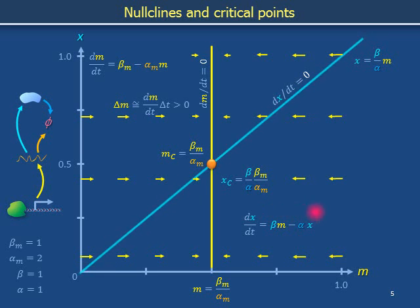Along the blue nullcline, time rates of translation and protein degradation precisely cancel. For a point to the right of the line — where messenger RNA level is relatively high — the time rate of translation exceeds the time rate for protein degradation, so the protein level increases over a short time interval delta_t, as indicated by the blue quiver pointing upward. To the left of the blue nullcline, the messenger RNA level is relatively low, so the time rate of translation is less than the time rate for protein degradation. dx/dt is negative, and protein level x decreases with time. We can fill in a field of quivers that become shorter in a graded fashion as we get closer to the blue nullcline from either side.